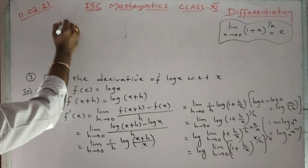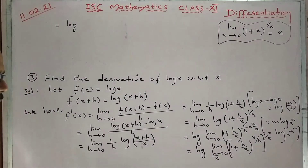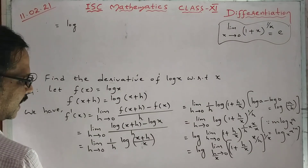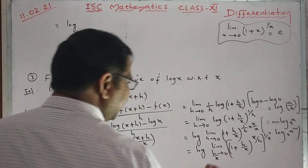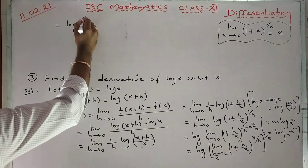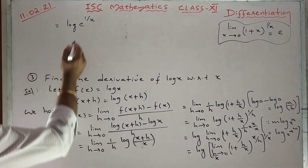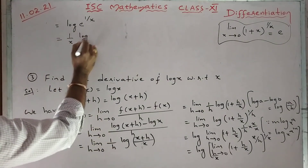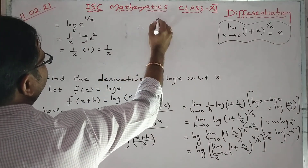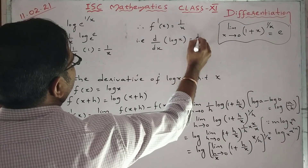So we get log(e^(1/x)) = (1/x)·log e = 1/x, since log e = 1. Therefore f'(x) = 1/x, that is d/dx of log x = 1/x.